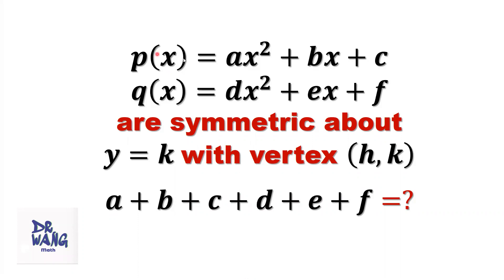P of x equals A x squared plus B x plus C. Q of x equals D x squared plus E x plus F. Both are parabolas. They are symmetric about the line y equals k with vertex h, k. What is the value of A plus B plus C plus D plus E plus F?